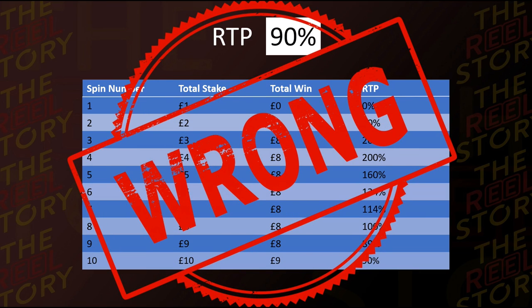Now this perception of RTP is completely and utterly wrong. A game has no concept of how much money you've put into it, no concept of how much money other people have put into it, no concept of how much money was put in before you started playing or after you stopped. It does not know and it does not care. The RTP is actually a number that is calculated based on the mathematical model of the game — it's not something that is set and the game is forced to adhere to. It's just the natural way the game plays and pays out based on how it's been created.